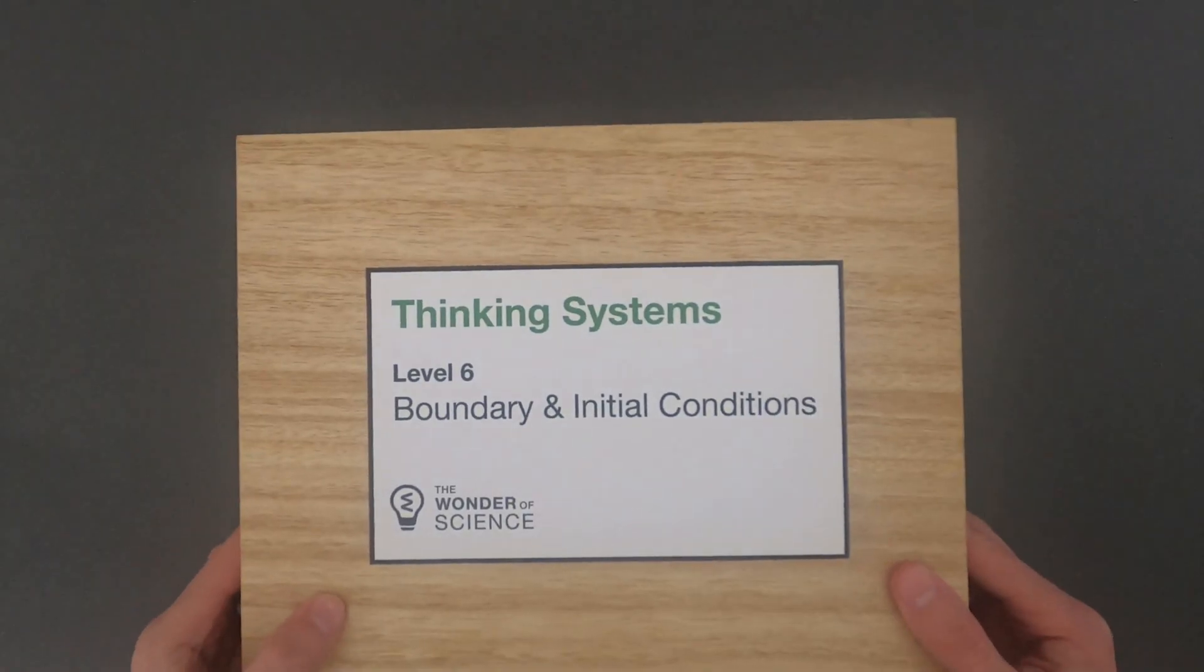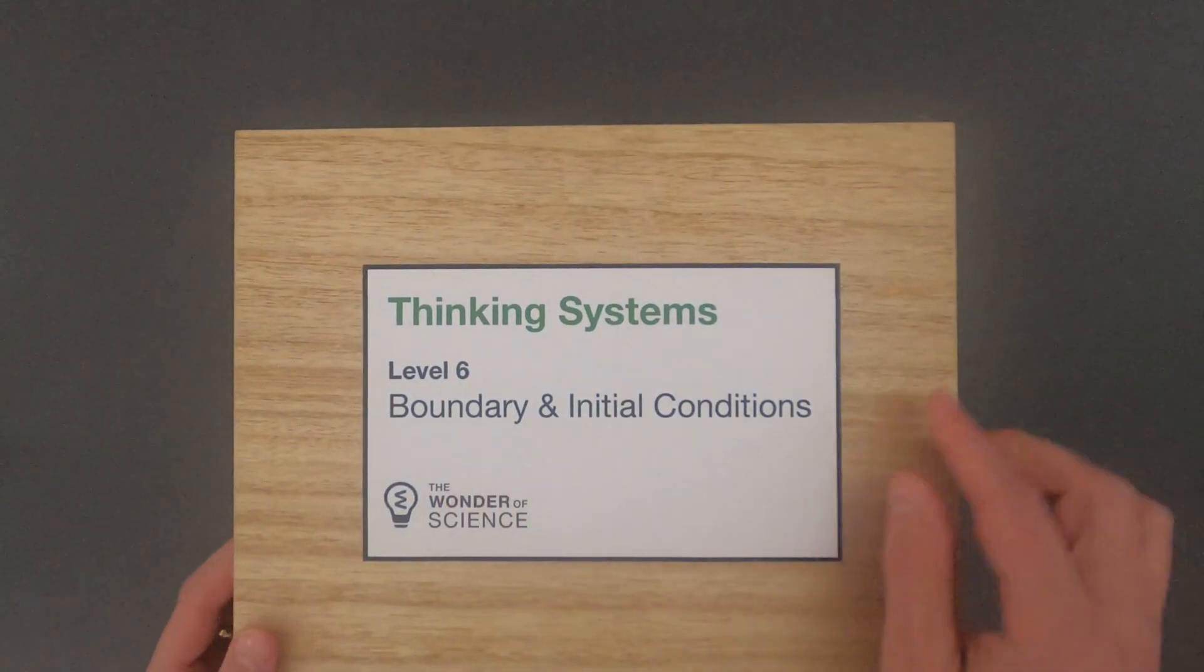Hi, it's Mr. Andersen and this is Thinking in Systems Level 6, Boundary and Initial Conditions.